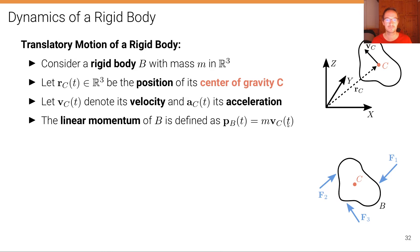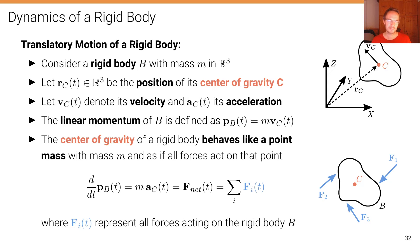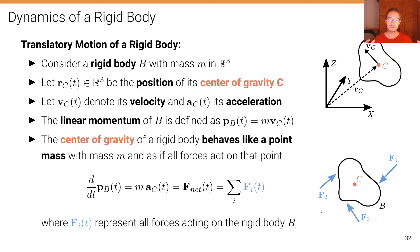The linear momentum of b is defined as pb of t equals m times the velocity at the center of gravity. With respect to the center of gravity, the center of gravity of a rigid body behaves like a point mass with mass m. Therefore, the time derivative of the linear momentum equals m times the acceleration at the center of gravity, which equals the sum of all forces acting on the rigid body b.